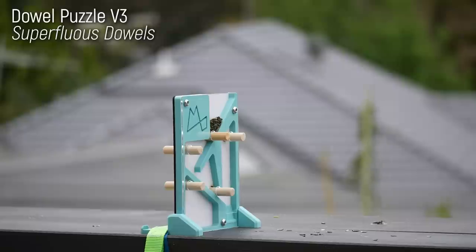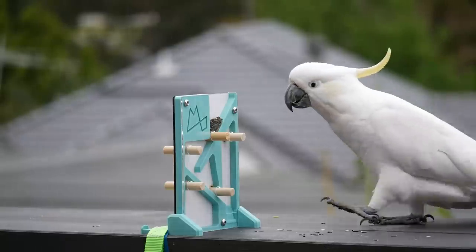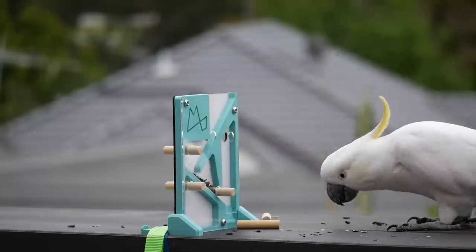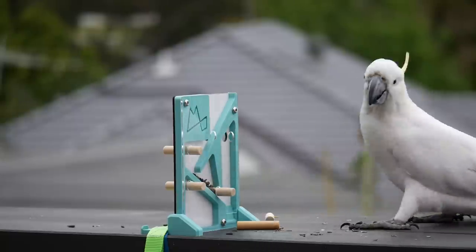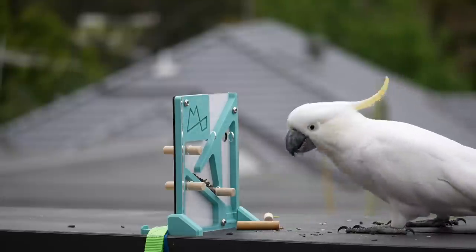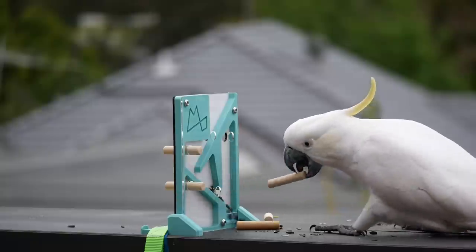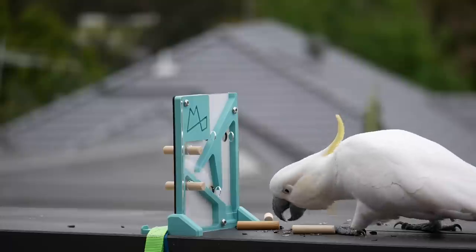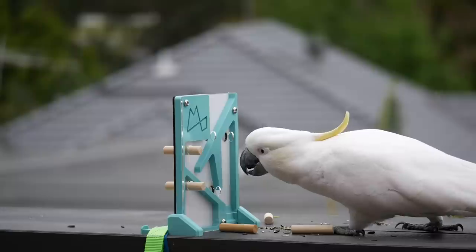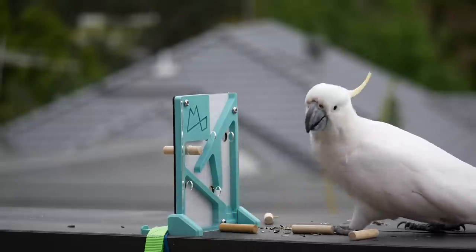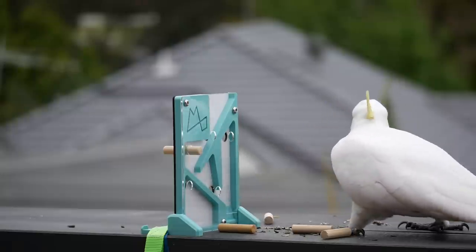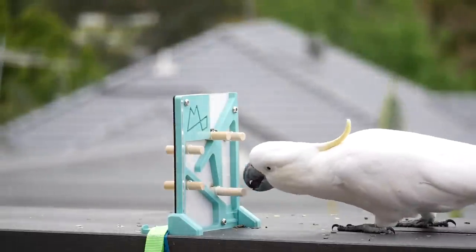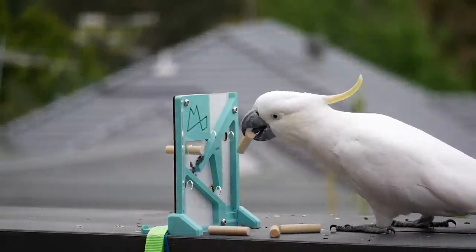Our final dowel puzzle is this one with three extra dowels for him to contend with, so let's see how he does here. There's no question by now that Popeye is an absolute pro at removing these dowels, but the extra ones do seem to throw him off just a little bit. However, it's really interesting to see that he completely ignores the two on the left, especially that one at the top left.